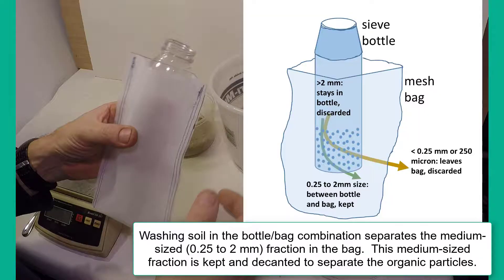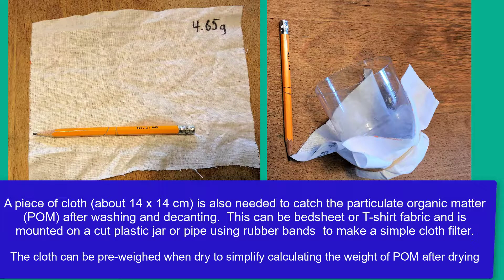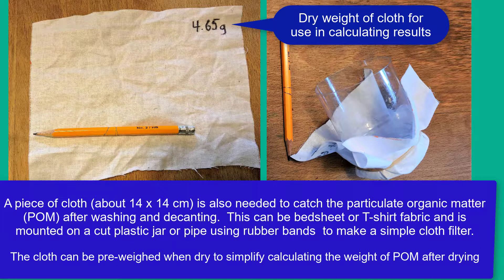This diagram shows the way that the bottle and the mesh bag work together to retain only the fraction of soil between 250 microns and 2-millimeter size. To catch the organic matter after washing the soil, you also need a small piece of cloth fixed to a small tube or cut plastic container.